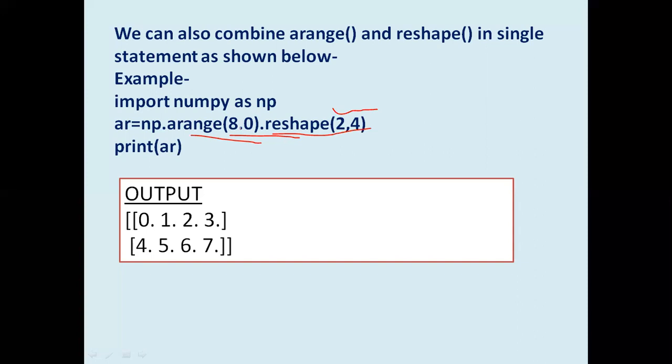If you simply give integer 8, you will get values 0 to 7 with 2 rows and 4 columns. So in a single statement we can use arange and reshape to create a 2D array.